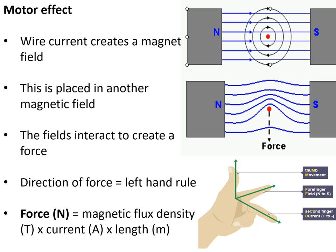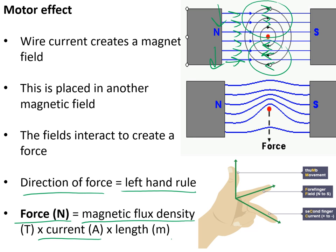If a current-carrying wire is placed inside another magnetic field, we get the motor effect. Where the wire's field points in the same direction as the external field, the fields repel and push the wire; where they point in opposite directions an attractive force also acts — overall the wire experiences a net force. The direction of this force is found using Fleming's left-hand rule: point your forefinger from north to south (field direction), your second finger from plus to minus (current direction), and your thumb points in the direction of the force. The equation is: F = BIL (force = magnetic flux density × current × length of wire in metres).